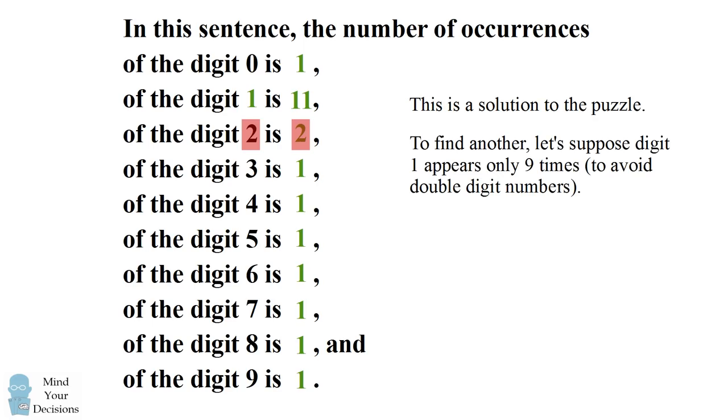Let's try and see if we can avoid double digit numbers, and let's suppose it just appears nine times. So we'll replace the value of eleven with nine. So where does this guess take us?